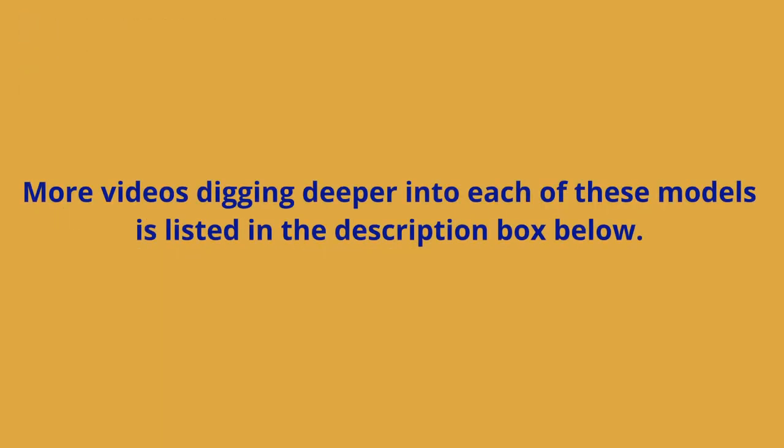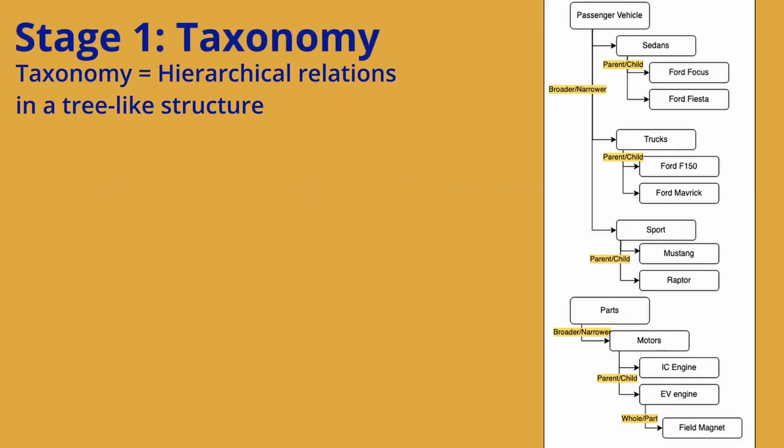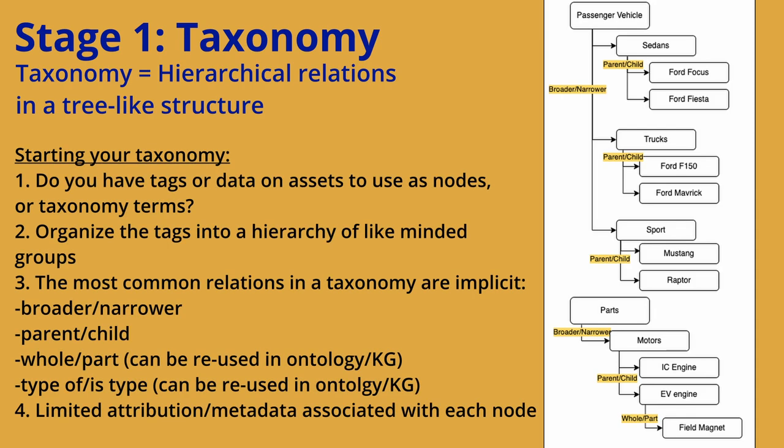Each of these models can have a much deeper dive associated with them — I cannot do all of those in one video, so I have linked every model and corresponding videos in the past for a deeper dive if you want to check those out. In our scenario, we already have tags on the content and processes in our manufacturing plants that we can identify what's going on in each of those plants. The problem is those are just tags — they have no organization to them. The very first thing we're going to do is think about how like-minded things go together.